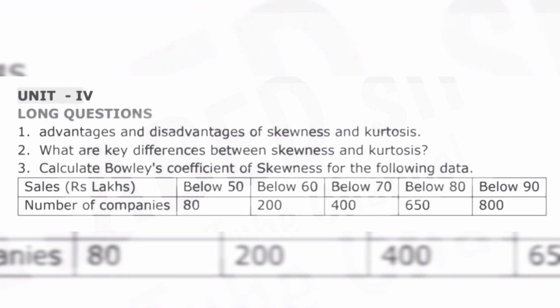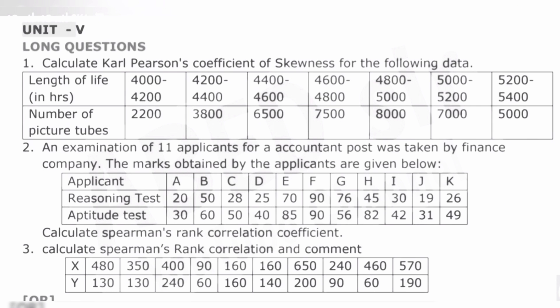From Unit 4, Bowley's coefficient of skewness is a definite problematic question — it is the most important and most repeated question from this unit. You cannot expect theory here. If you want to learn theory, the differences between skewness and kurtosis, and the advantages and disadvantages of skewness and kurtosis, are options — but chances are less.